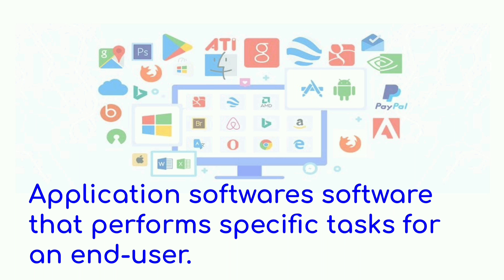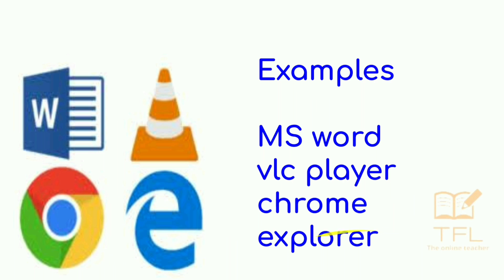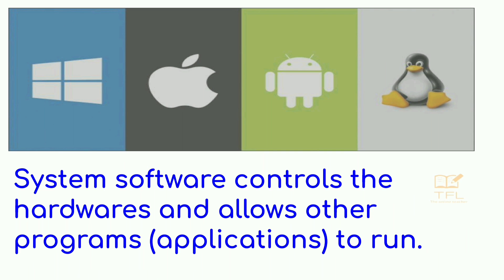See the examples: MS Word, VLC Player, Chrome, and Explorer. MS Word is used to type documents. VLC Player plays music and video files. Chrome and Explorer are used to search and browse the internet.